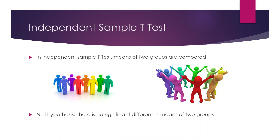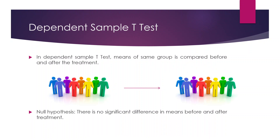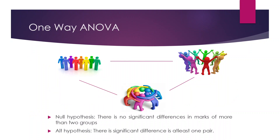If I talk about dependent sample t-test, the same group is compared. The means of the same group are compared before and after the treatment. The null hypothesis in case of dependent sample t-test is: there is no significant difference in means before and after the treatment. Now let's understand what is the case of ANOVA. In ANOVA, we are comparing more than two groups, and the null hypothesis is there is no significant difference.